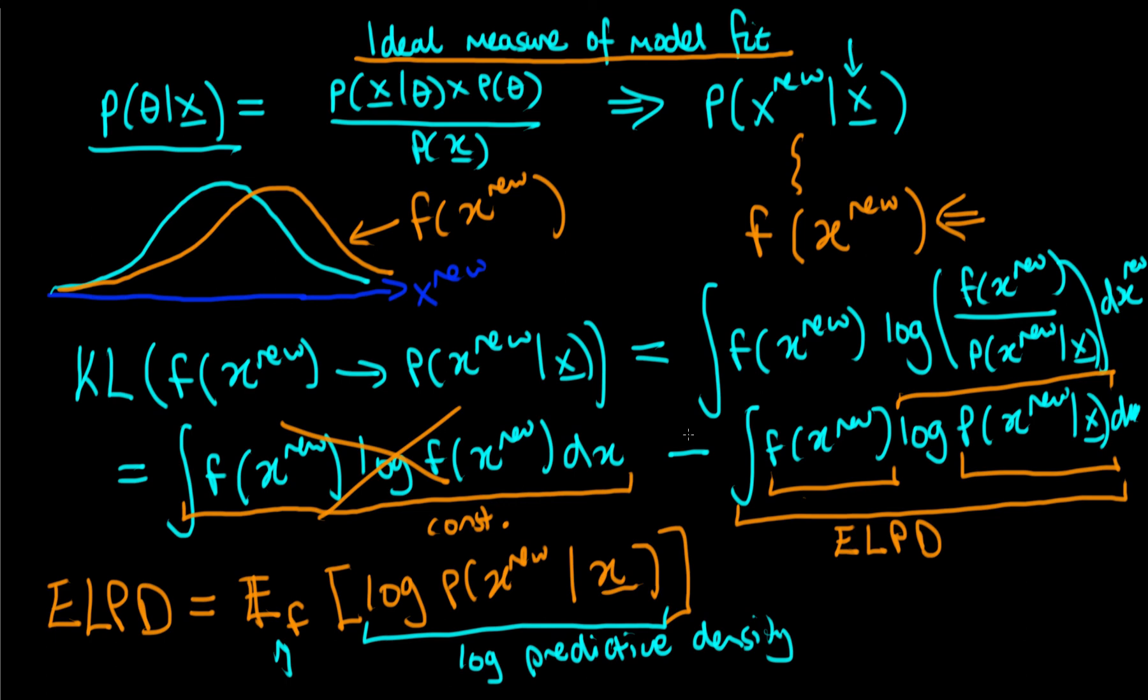It's the ideal measure because it assumes that we actually know F, whereas in practice we never know F. And so this is an expression to which we aspire, but we never quite get there. And the idea is that we try our best to estimate the expected log predictive density in reality.